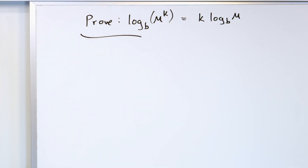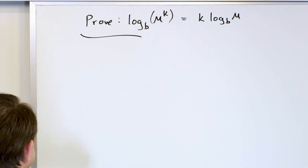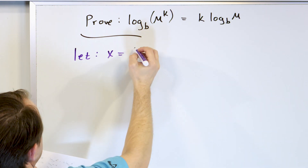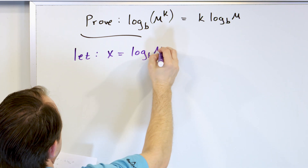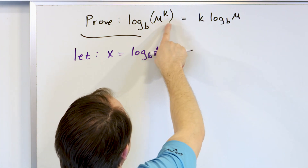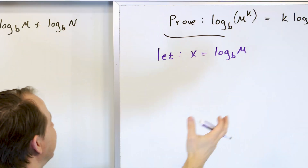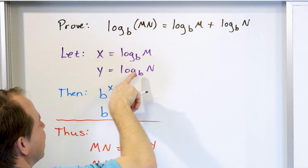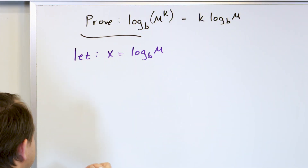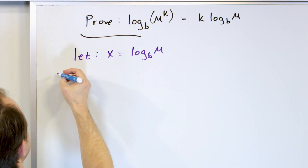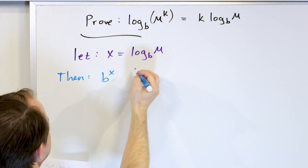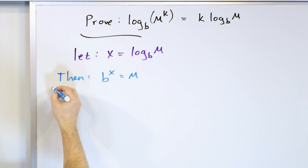In this case, we're going to let x equal log base b of m. We could let y equal log base b of n, but in this property there is no n anywhere, so we don't need to define that. Here we had an m and an n so we needed a term for each, but here there is no n. From this single definition, the same thing as before pops out: b to the power of x equals m.